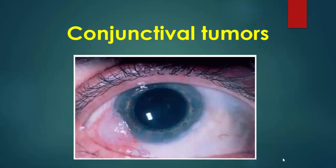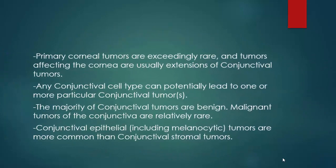Conjunctival tumors. Corneal tumors are very rare, so tumors of the cornea mainly are extensions from the conjunctival tumors. Any conjunctival cell type can potentially lead to one or more of the conjunctival tumors. The majority of conjunctival tumors are benign. Malignant tumors of the conjunctiva are relatively rare. Conjunctival epithelial tumors including melanocytic tumors are more common than conjunctival stromal tumors.